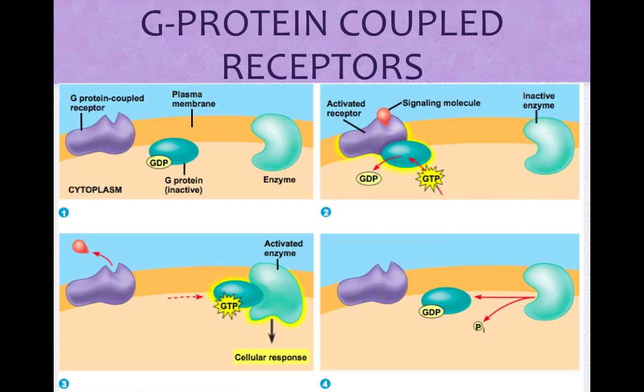G-protein receptor systems are widespread and diverse. For example, they are important in embryonic development — G-proteins guide development. They are also important in smell and vision, which depend on G-proteins. Bacteria that cause botulism, pertussis, and cholera secrete toxins that interfere with G-proteins.